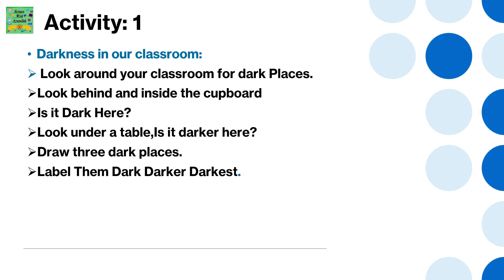Activity 1: Darkness in our classroom. Look around your classroom for dark places. Look behind and inside the cupboard. Is it dark here? Look under a table. Is it dark here? Draw three dark places and label them dark, darker, and darkest.